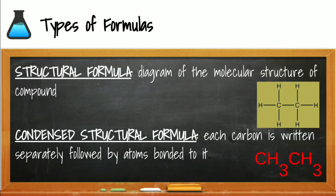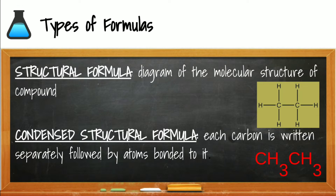The structural formula shows how all of the pieces are connected in the structure. In organic compounds we always begin by bonding the carbons to each other, then fill in the hydrogens. The condensed formula shows what is attached to each carbon — in this case, each carbon has three hydrogens attached to it.